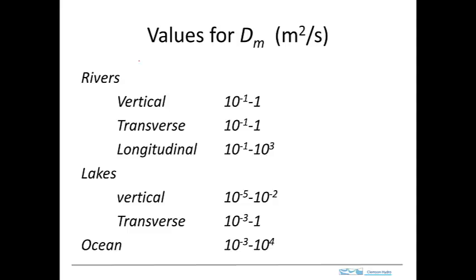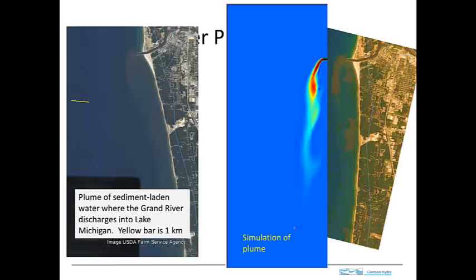To wrap things up, here's a summary of values of D for different settings — rivers, lakes, and the ocean — in units of meter squared per second. In rivers, vertical mixing is around one, but longitudinal dispersion can be very much greater than one. Lakes can be fairly small if quiescent but can get up to approximately one. In the ocean, D spans a wide range and can be very large indeed.